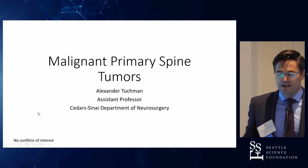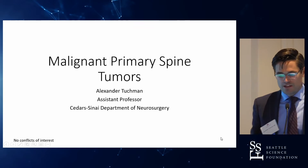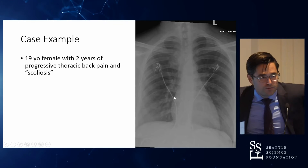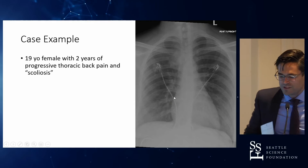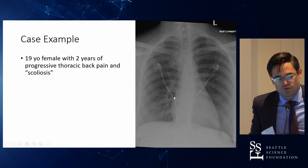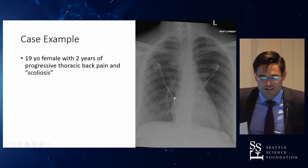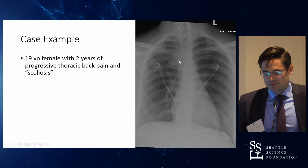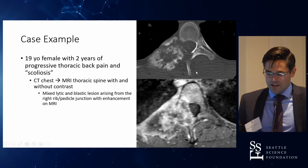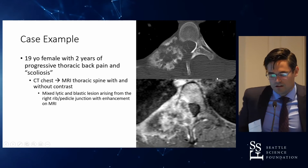I'm going to be speaking today about primary spine tumors in general first, and then using a specific case to highlight some of the issues involved. Most of us here are clinicians, so we'll focus on a specific patient: a 19-year-old woman who presented at an outside facility with two years of progressive back pain. On the x-ray she has this lesion, which eventually leads to a CT scan and then an MRI of her thoracic spine.